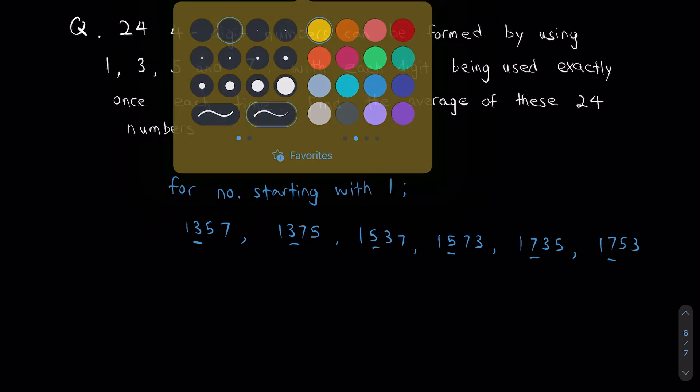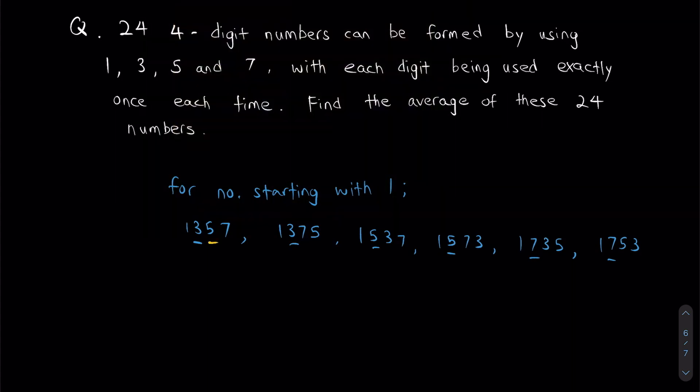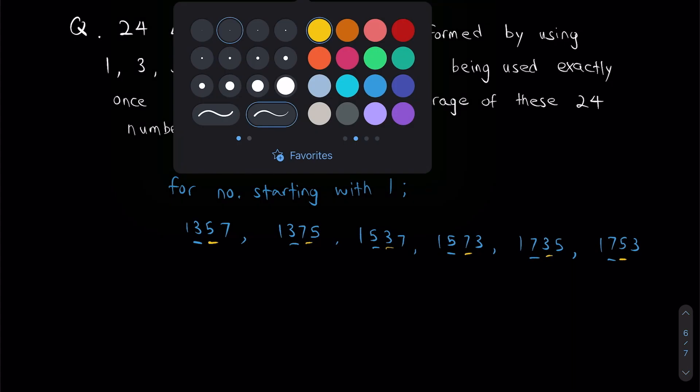Next, let's look at the tens position. Once again, if you look closely, you notice that the numbers 3, 5, and 7 appear the same number of times.